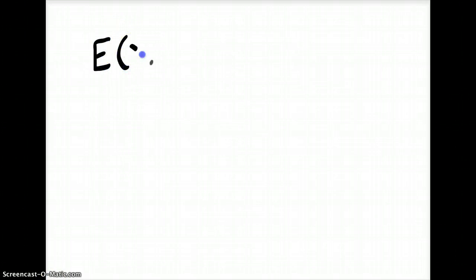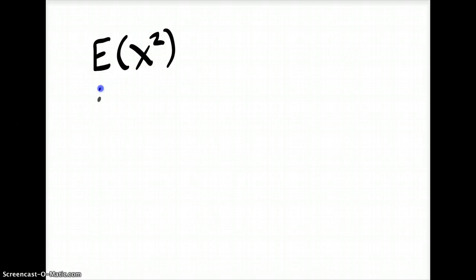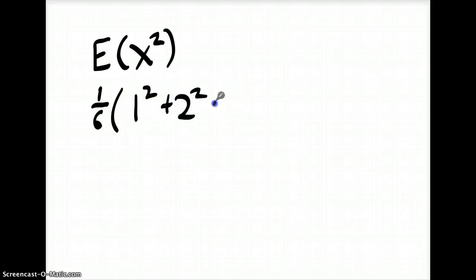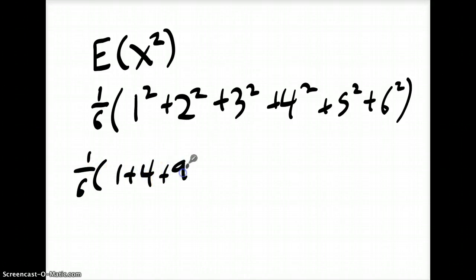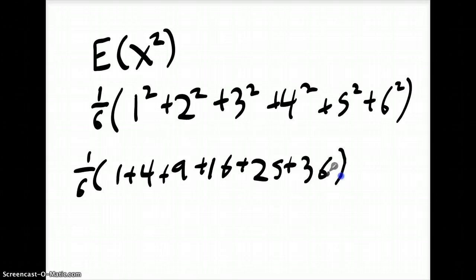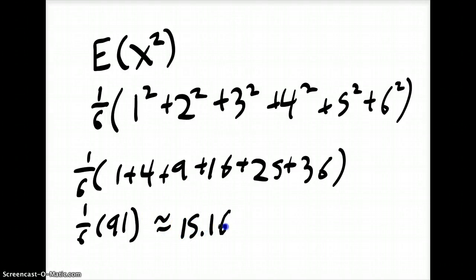Now we need to calculate the expected value of X squared. All we have to do is square the random variable values. It's going to be the same thing — 1/6 — but times 1 squared plus 2 squared plus 3 squared plus 4 squared plus 5 squared plus 6 squared, which is the same as 1/6 times 1 plus 4 plus 9 plus 16 plus 25 plus 36, which is 1/6 times 91, which is approximately equal to 15.1666 repeating.